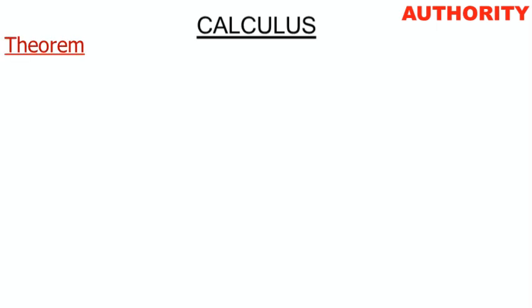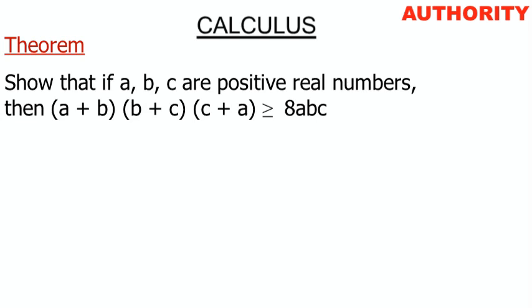Welcome again. I want to take another example under Calculus Math 112. The question says: show that if a, b, and c are positive real numbers, then (a+b)(b+c)(c+a) is greater than or equal to 8abc. So this is what we're going to show — we'll solve something and arrive at (a+b)(b+c)(c+a) ≥ 8abc.